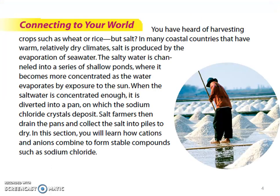You have heard of harvesting crops such as wheat or rice, but salt? In many coastal countries with warm, relatively dry climates, salt is produced by the evaporation of seawater. The salty water is channeled into a series of shallow ponds, where it becomes more concentrated as the water evaporates by exposure to the sun. When the salt water is concentrated enough, it is diverted into a pan on which the sodium chloride crystals deposit. Salt farmers then drain the pans and collect the salt into piles to dry.